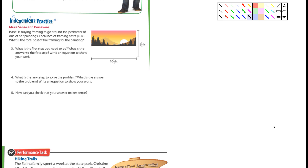All right, it says Isabella is buying framing to go around the perimeter, there's a clue right there, perimeter of one of her paintings. So that means she's going to be going all the way around her painting here, and it says each inch of the framing costs 40 cents. What's the total cost? This is the question you're answering. What's the total cost for framing the painting?